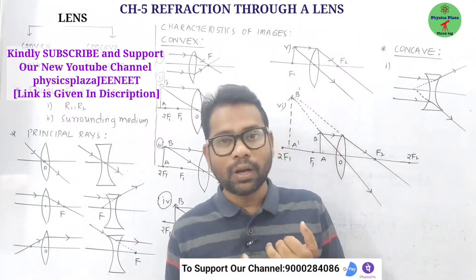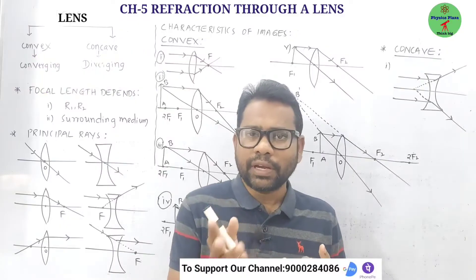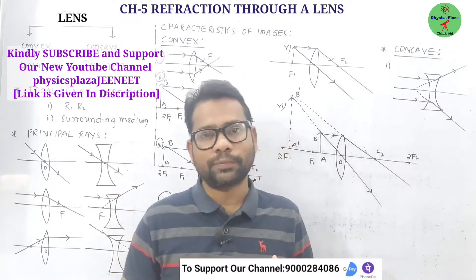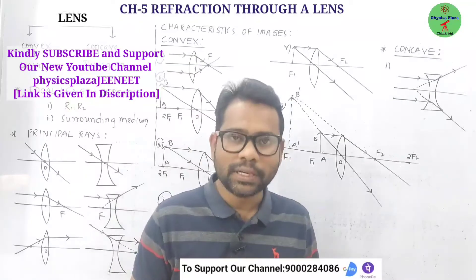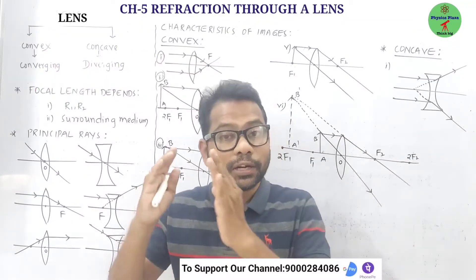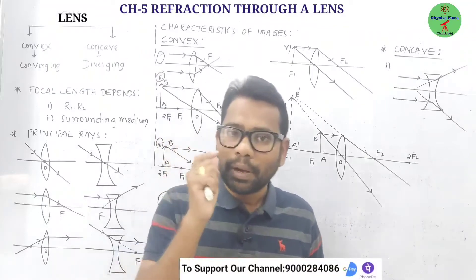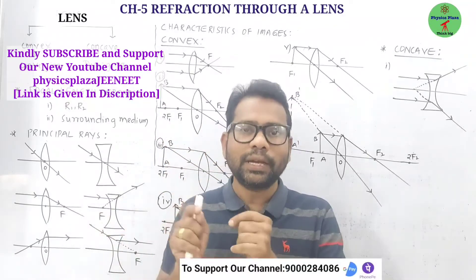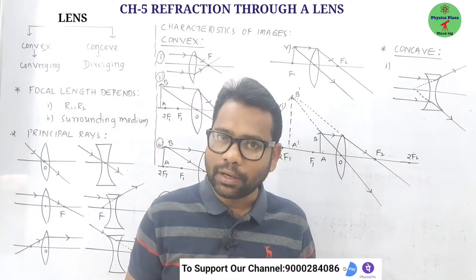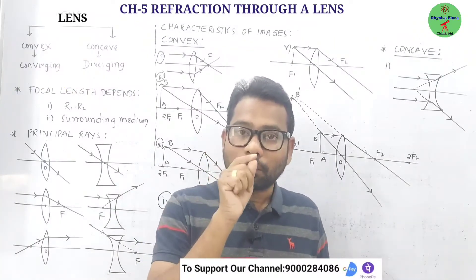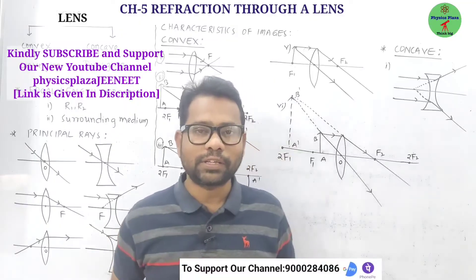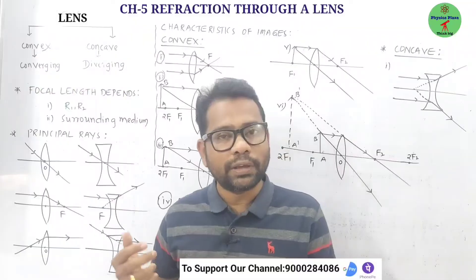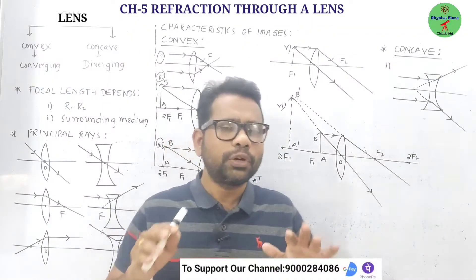Under convex lenses we have biconvex or double convex lens; if the radii of curvature are equal it is called an equiconvex lens. We also have plano-convex and concavo-convex lenses. Under concave lenses we have biconcave or double concave lens — equiconcave if radii are equal — and also plano-concave and convexo-concave lenses.